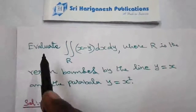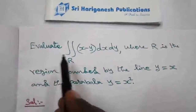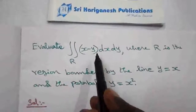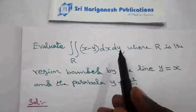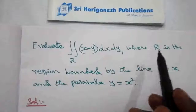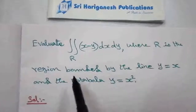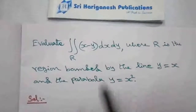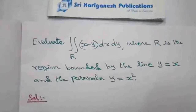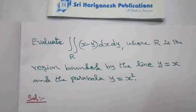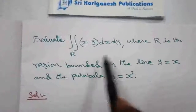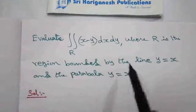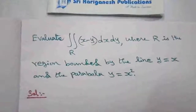Evaluate the double integral over R of x minus y dx dy, where R is the region bounded by the line y equal to x and the parabola y equal to x square. We have to evaluate the integral where R is the region bounded by the line and parabola.